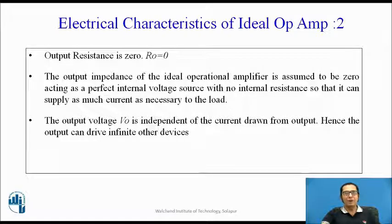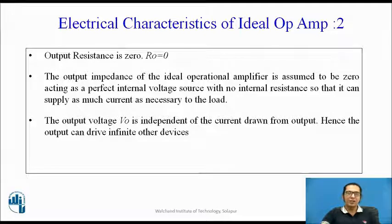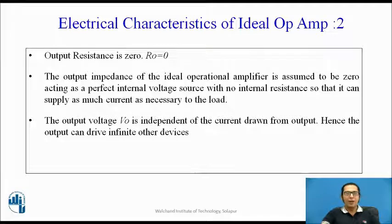The second characteristic of an ideal op-amp is that its output impedance is zero. The output impedance is assumed to be zero, and the op-amp acts as a perfect internal voltage source with no internal resistance, so that whatever output is given by the op-amp, the entire output appears across the load. In other words, the op-amp can supply as much current as necessary into the load. The output voltage V0 is independent of the current drawn from the output, hence the output can drive infinite other devices.